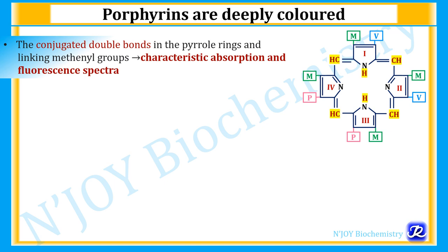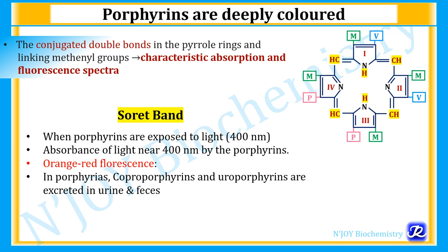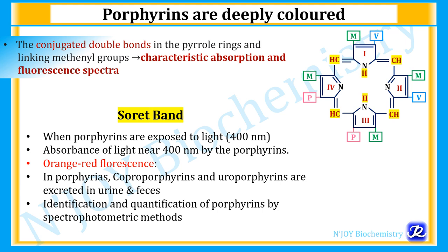Porphyrins are deeply colored because of the presence of conjugated double bonds in the pyrrole rings and the linking methenyl group, which gives characteristic absorption and fluorescent spectra to porphyrins. This is very important for identification of porphyrins in the urine and feces of patients with porphyria. The Soret band: when porphyrins are exposed to light of wavelength 400 nm, there is absorption of light giving orange-red fluorescence. Coproporphyrins and uroporphyrins are identified and quantified by spectrophotometric method.